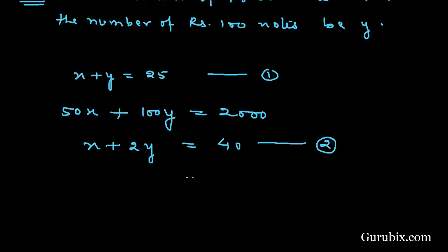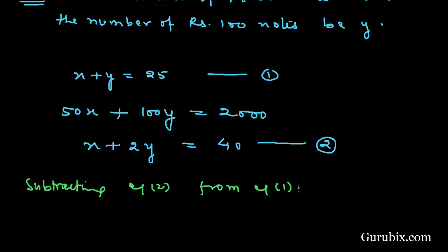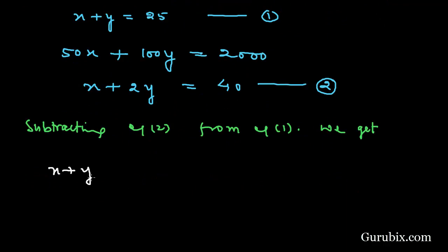Now we shall apply the elimination method to solve this pair of linear equations. We observe that the coefficient of x in both equations is the same, so we can subtract equation 2 from equation 1. Subtracting equation 2 from equation 1, we get: x plus y minus x minus 2y equals 25 minus 40.